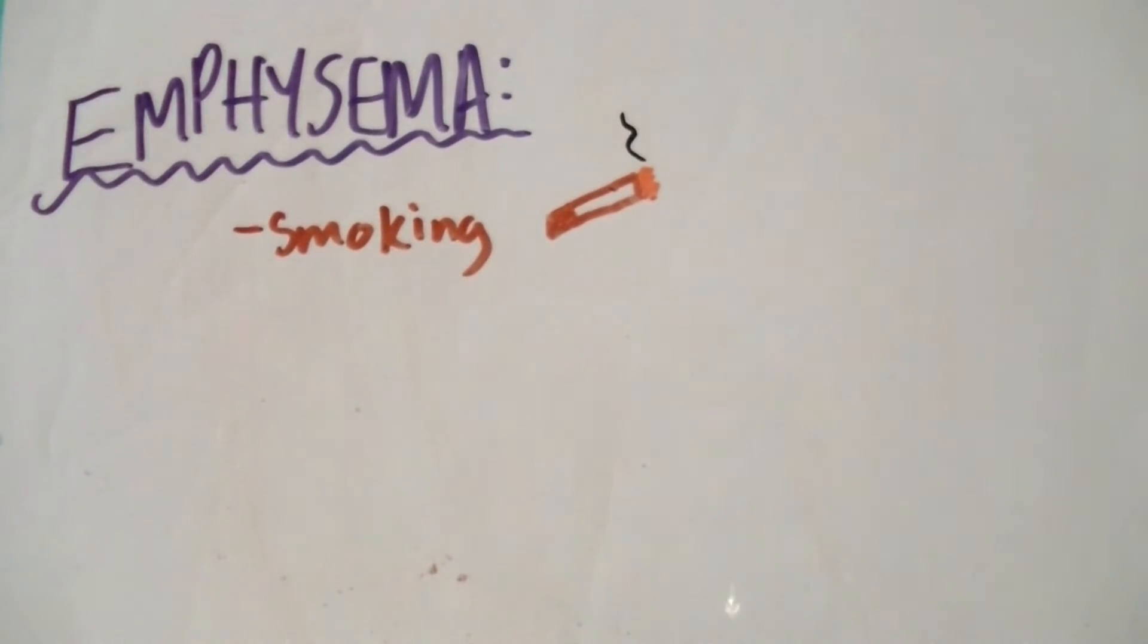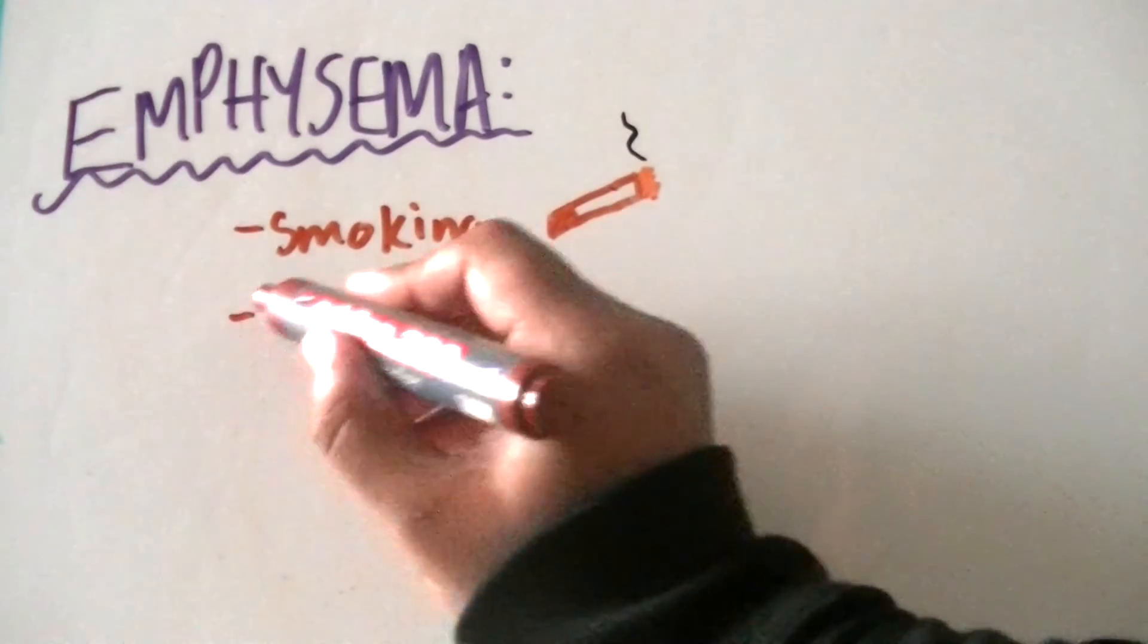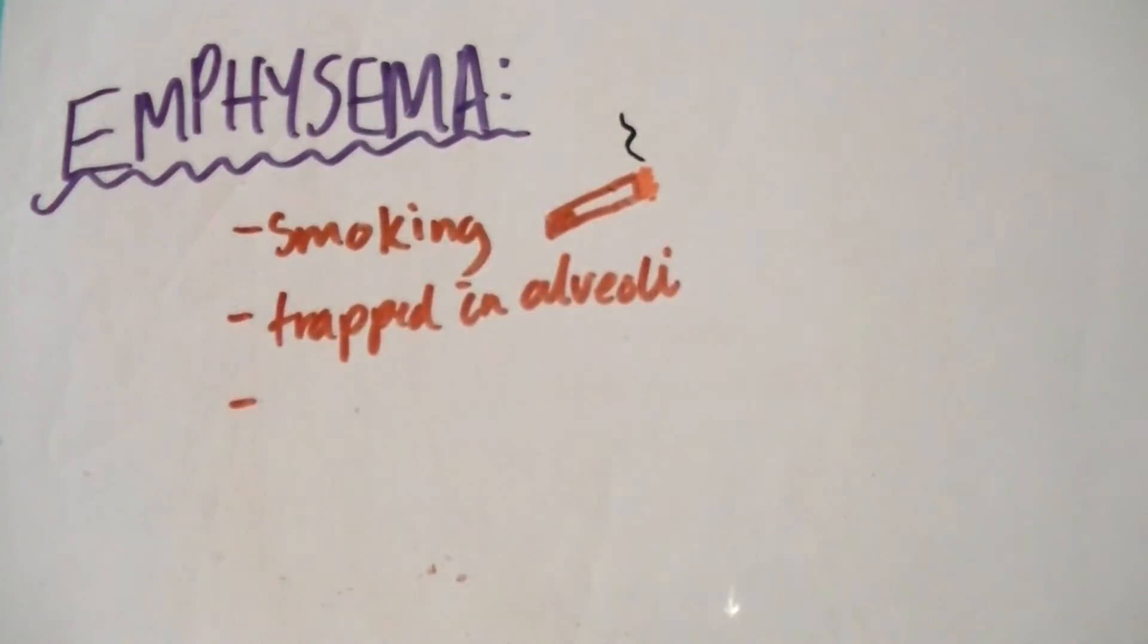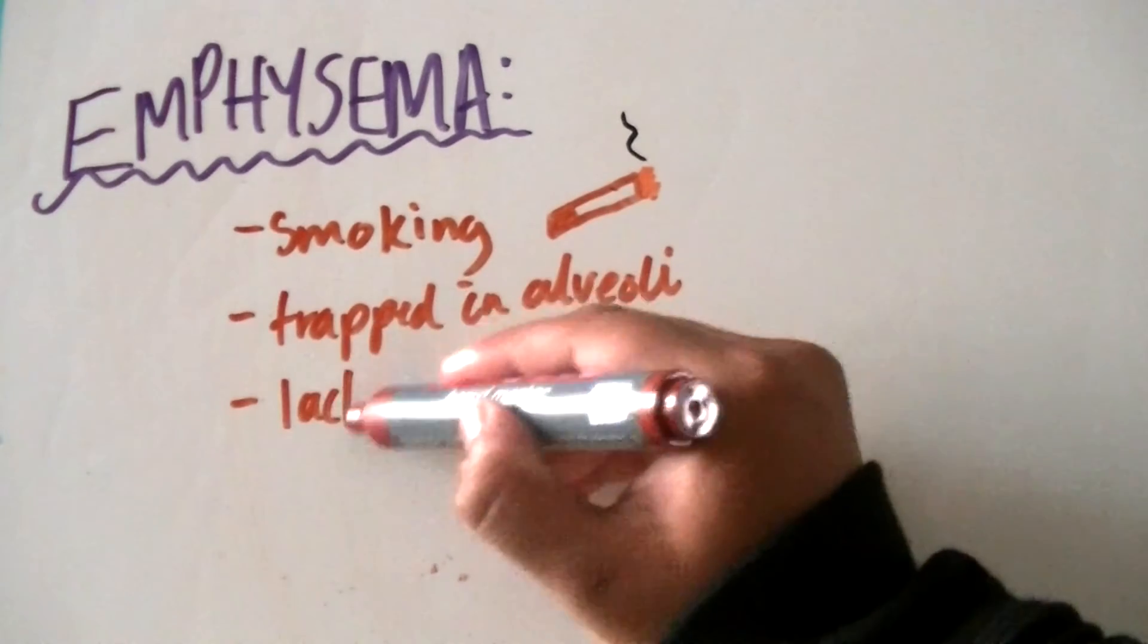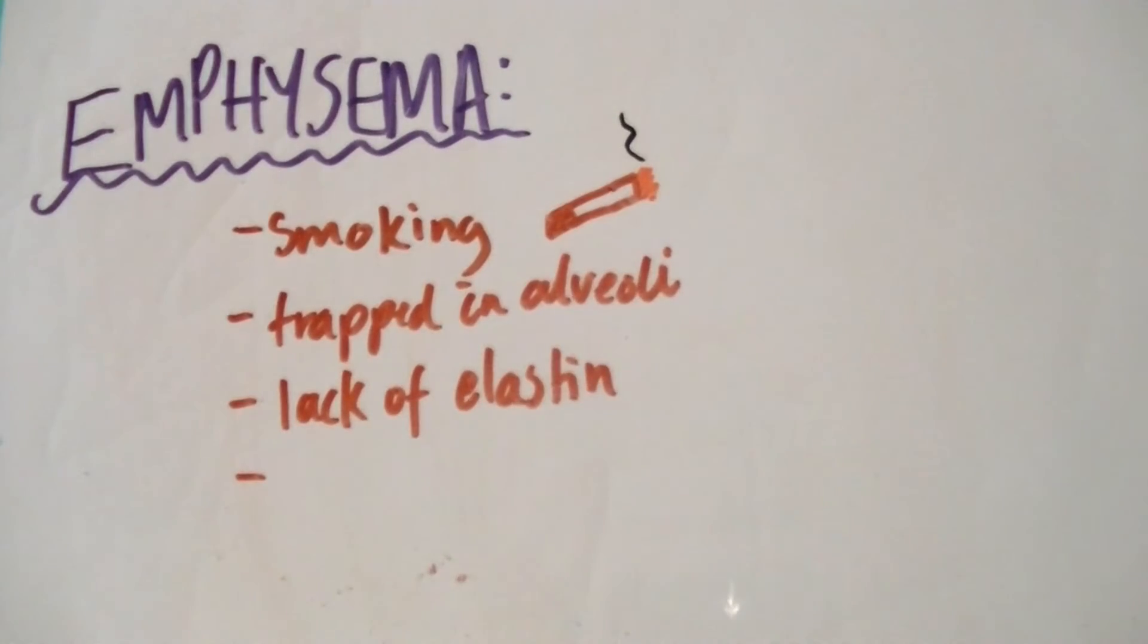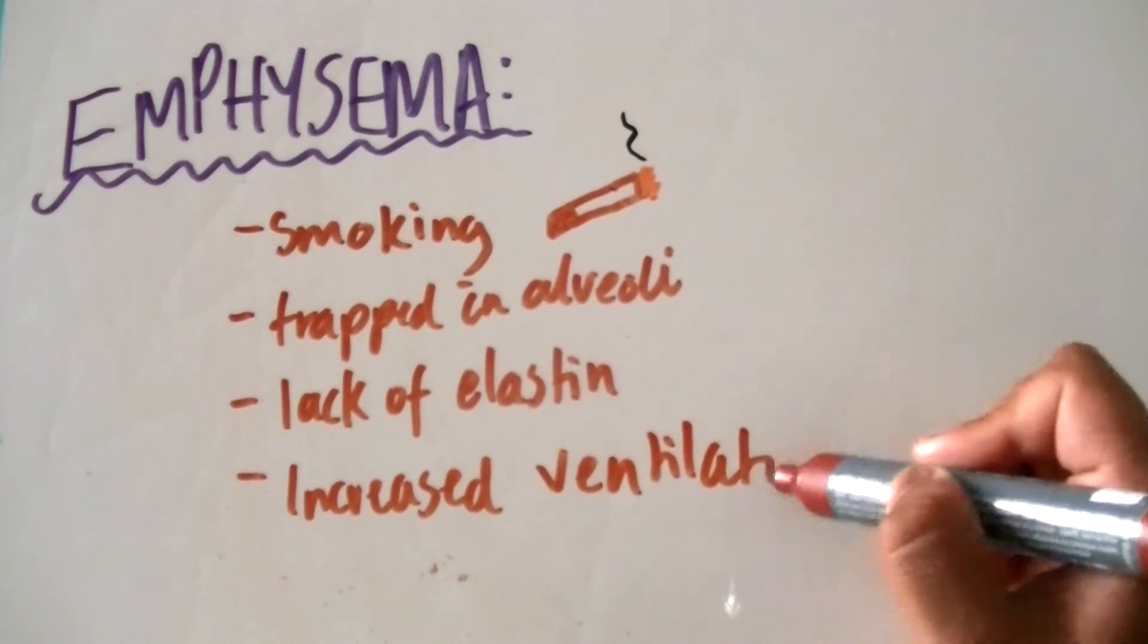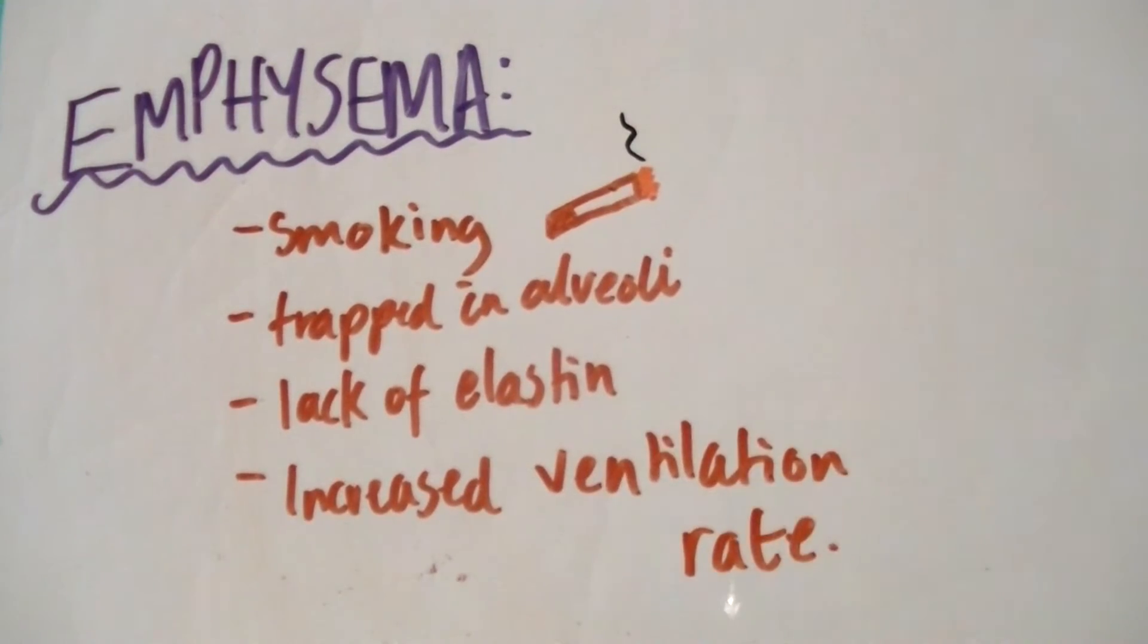Elastin helps the alveoli to return to its original shape after breathing. The loss of elastin means that the alveoli can't recoil and expand as much, and the particles remain trapped in the alveoli. It also leads to destruction of the alveoli walls. Symptoms include wheezing and shortness of breath. People with emphysema also have an increased ventilation rate as they try to increase the amount of air reaching their lungs.